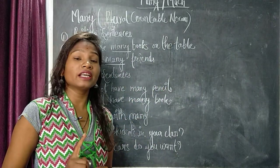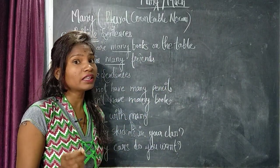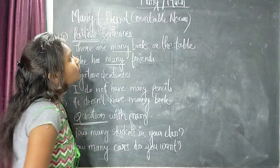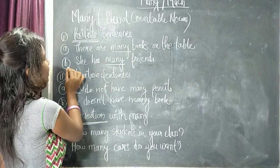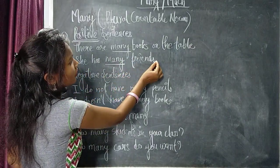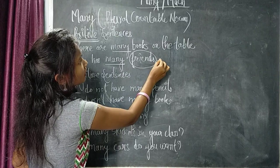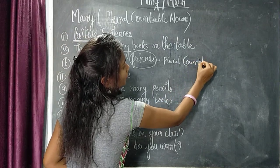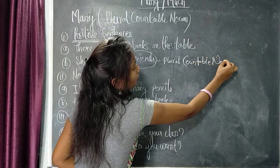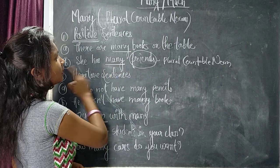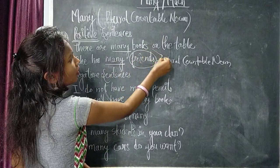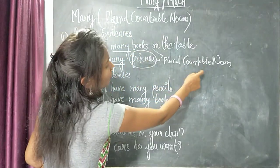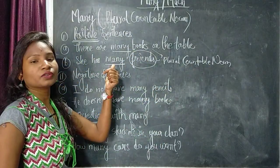Books has S added, which means plural. You just need to identify the S or ES to know when to use many — many always used with plural countable nouns. Second example: 'She has many friends.' Again, friends is a plural countable noun. That's why we use many. Both books and friends have S, making them plural countable nouns.